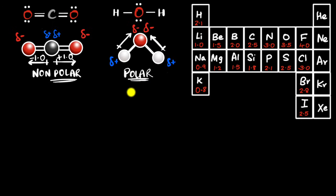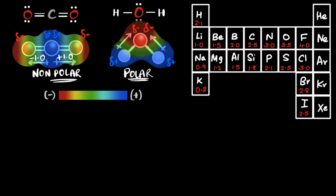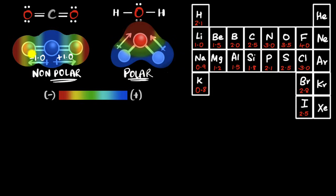The polarity can also be visualized using electrostatic potential (ESP) maps: red indicates a strong concentration of negative charge, blue indicates positive charge, and green represents neutral. For CO₂, the ends are red because oxygen has high electron density, and the carbon region is bluish. Both ends are equally red, showing symmetry — dipoles cancel and the molecule is non-polar. For water, one end is red and the other is blue, showing uneven charge distribution and confirming the molecule is polar.